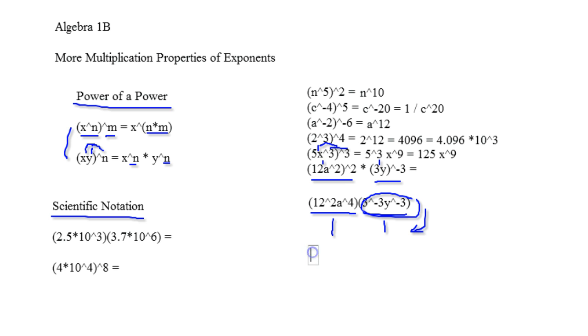So now what do I have? I have 12 squared which is 144 a to the fourth. That one's pretty simple, but then I have underneath I have 3 cubed, which is going to become 27, and then that's going to be y to the third.